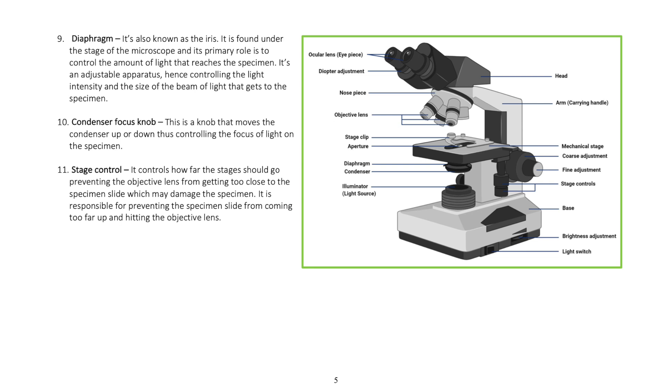The condenser focus knob is a knob that moves the condenser up or down, thus controlling the focus of light on the specimen.